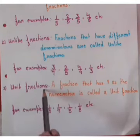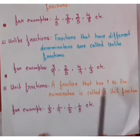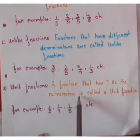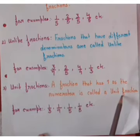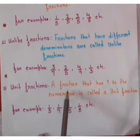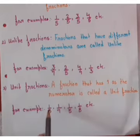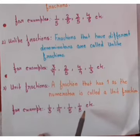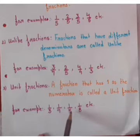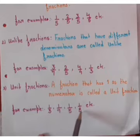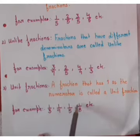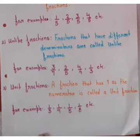Third is your unit fractions. A fraction that has one as a numerator is called a unit fraction. So if a fraction has one as a numerator, it is said to be a unit fraction. For example: one upon three, one upon seven, one upon five, one upon eight, etc. Here you can see all of them have one as a numerator, so they are all said to be unit fractions.